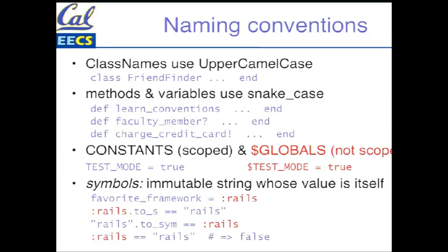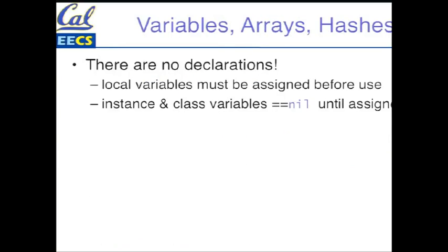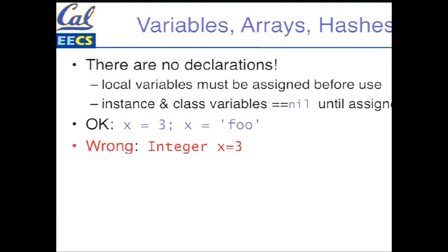Variables, arrays, hashes — there are no declarations. You have to assign a variable before you use it, otherwise you'll get an error. The instance and class variables of a class actually get default values of nil until they're assigned, so it's okay to dereference those. It might seem strange, unless you've come from Python, to see something like x equals three, and then a few lines later x equals a string. But that's perfectly fine, because objects like three and 'foo' have types, but the variables that refer to them don't have types.